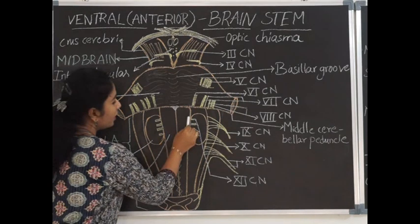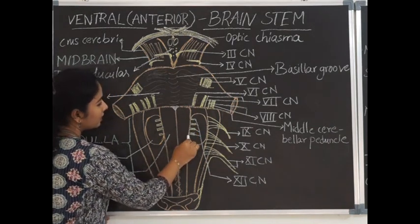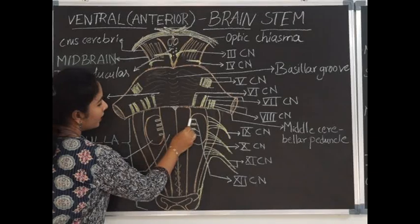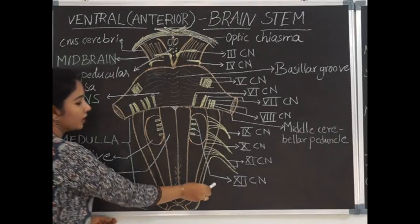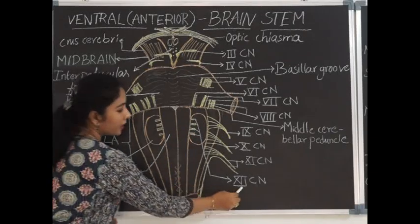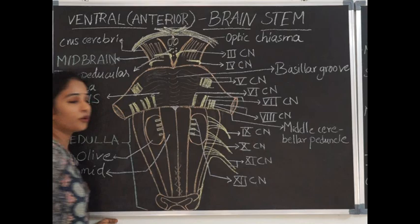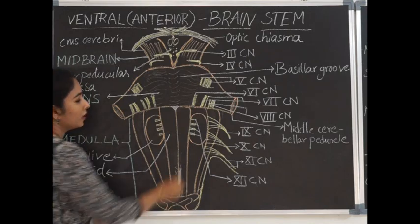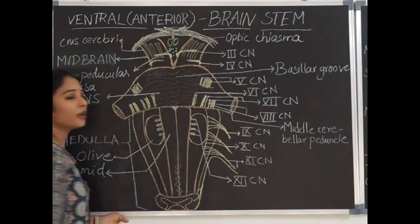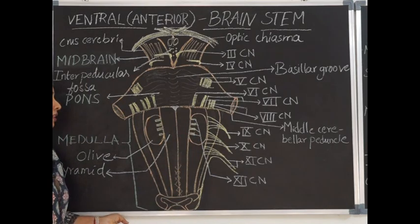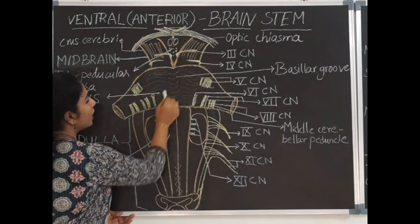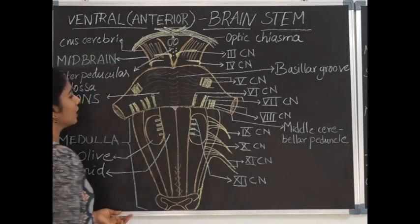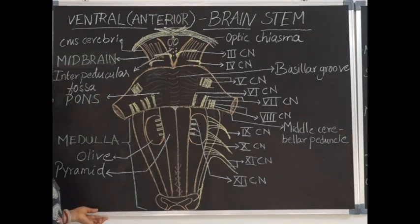Coming to the anterolateral sulcus — the rootlets here are for the 12th cranial nerve, that is the hypoglossal nerve. These rootlets join to form the hypoglossal nerve. The junction between the medulla and the pons is called the pontomedullary junction.